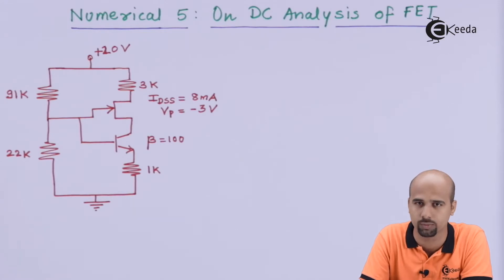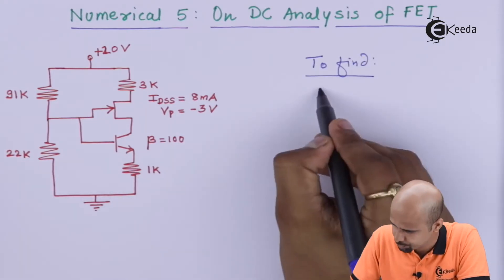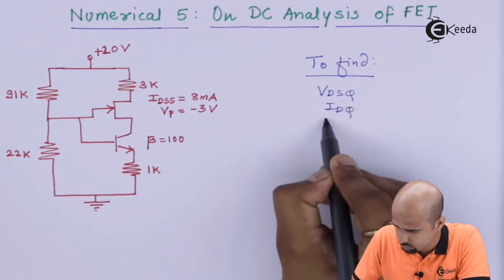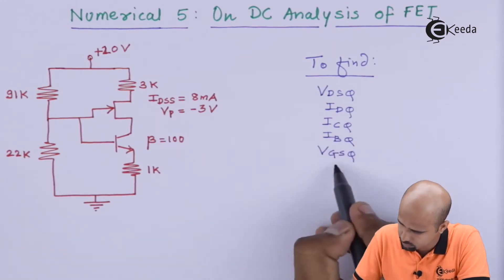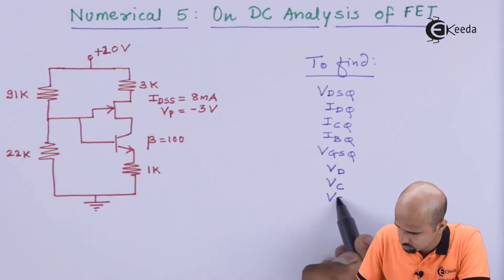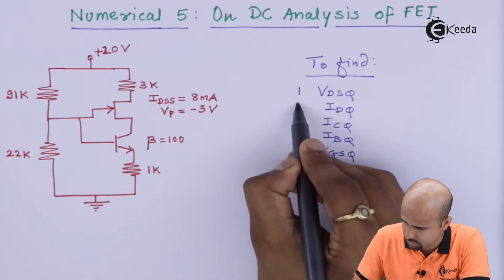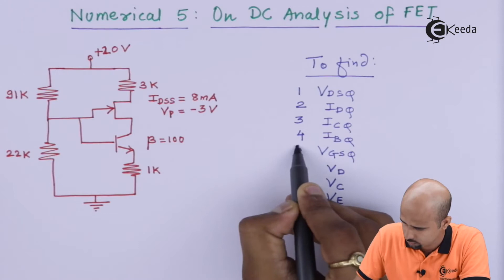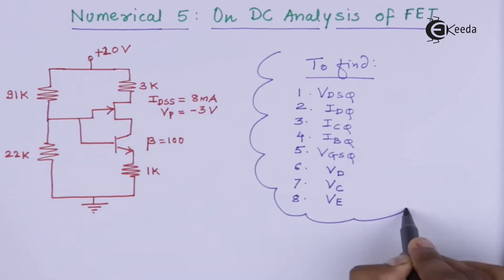That means, to find VDSQ. So, all these terminals, let's say this is 1st, this is 2nd, 3rd, 4th, 5th, 6th, 7th and 8th. So, these are our findings and we will go through step by step.